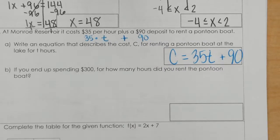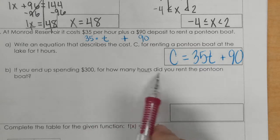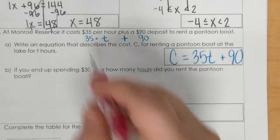Alright, then in part b, it says if you spent $300, for how many hours did you rent the pontoon boat? So, 300 is your cost, your C.